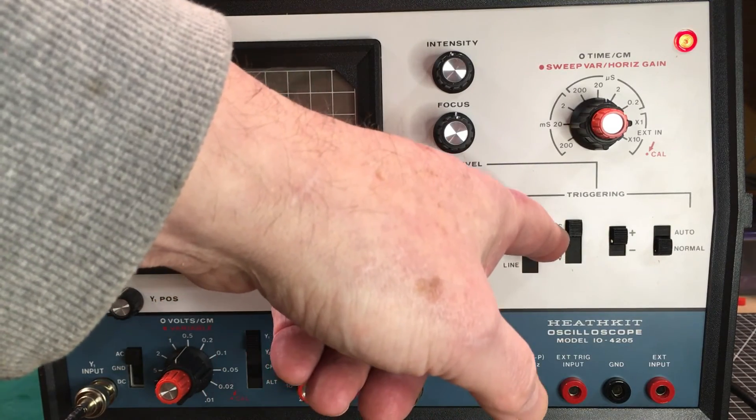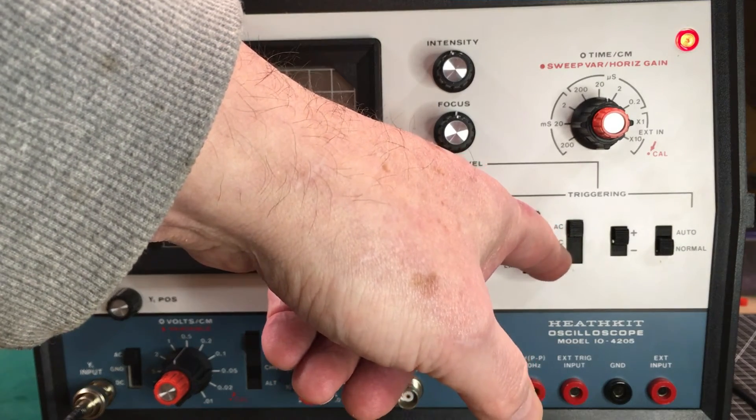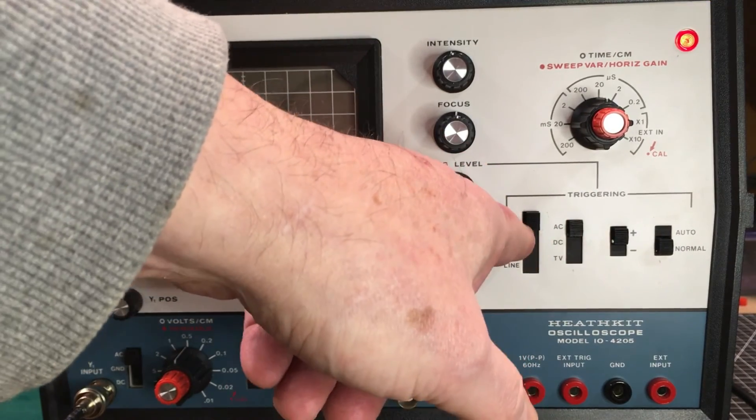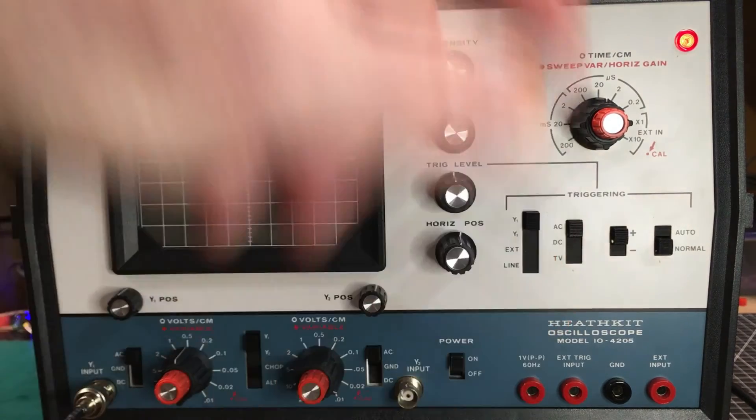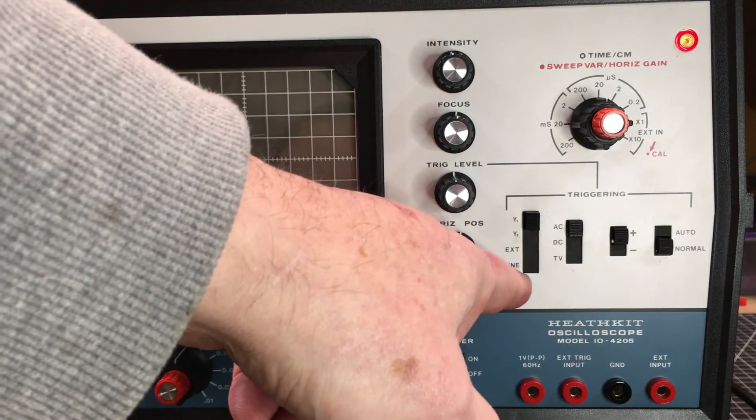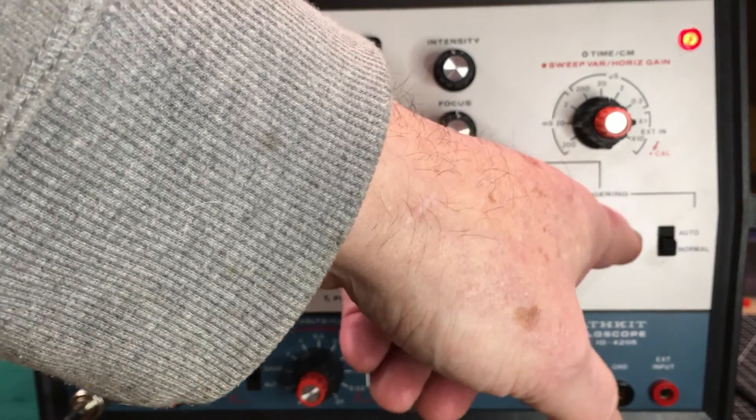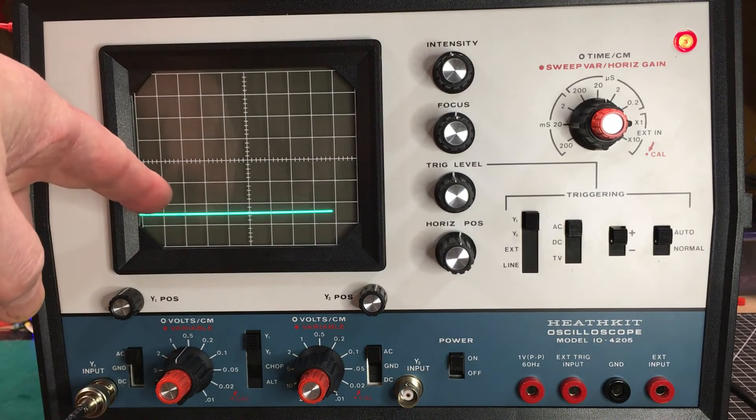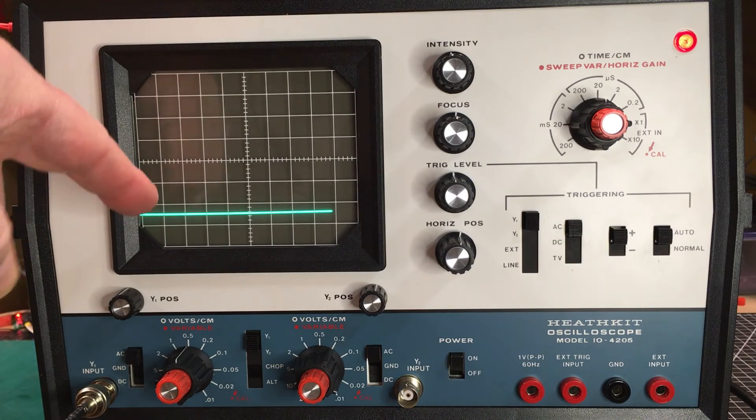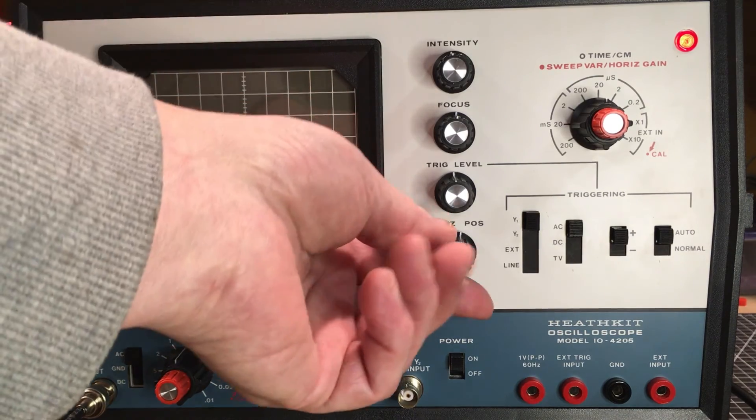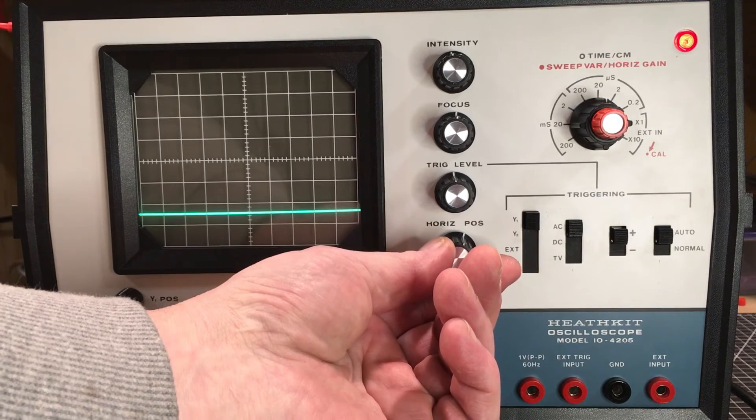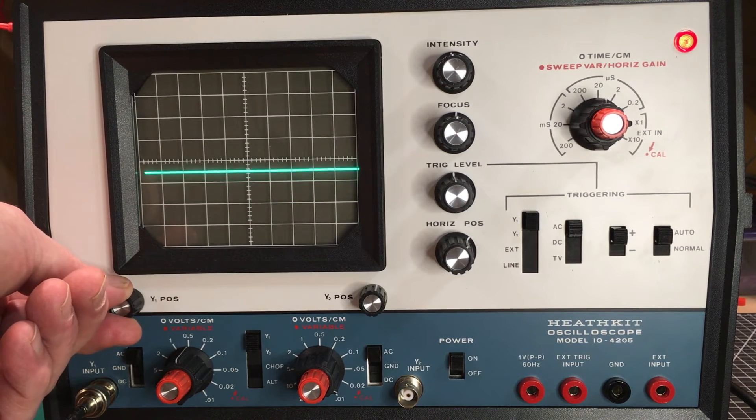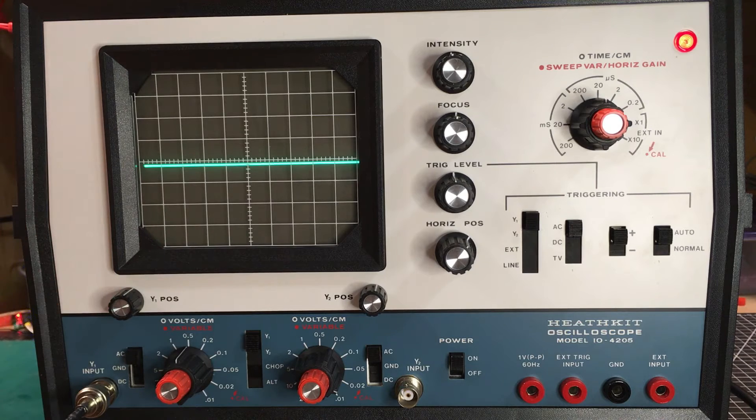If there's a large DC component, we're going to have trouble triggering on it unless we can find the level. So we'll put the trigger control here on AC. We're going to use the source here, we're going to put it onto channel one, Y1 here. You can see the external, that's a connector at the back. You could have another signal coming in, or you could trigger it off the line frequency here. We'll start off by looking at a positive going pulse and put it in auto. That way you'll get the display of displaying something even if there's nothing coming in. So you'll get a line there. Now we can adjust our horizontal position. We want to adjust that so that we can see the beginning of the sweep right there. And we'll adjust the Y position so that we can get it up in the middle.